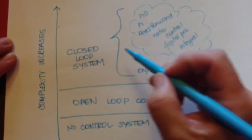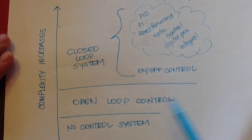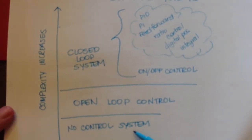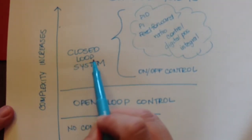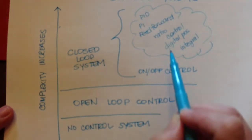What I want you to focus on here is that we basically have no control system, then we have open loop control, then as complexity increases we have closed loop control systems. And now the least complex of that would be on-off control, and then after that we would have all these other types of control systems.